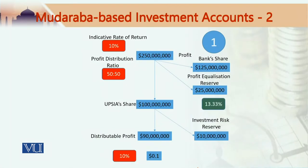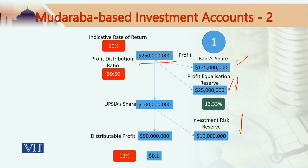In some jurisdictions or some banks, not just one reserve is maintained for profit smoothing — rather they maintain two reserves. One is called the profit equalization reserve and the other is called the investment risk reserve. In the case of a 250 million profit with two reserves: the bank's share is 125 million, 25 million goes into the profit equalization reserve, leaving the PSIA holders' share at 100 million. Out of that, 10 million is put into the investment risk reserve and 90 million is the amount distributed, generating a rate of return of 10 percent — equal to the indicative rate of return.